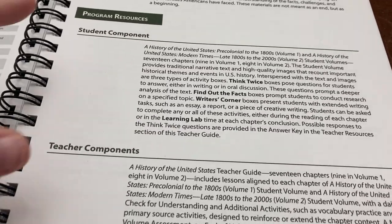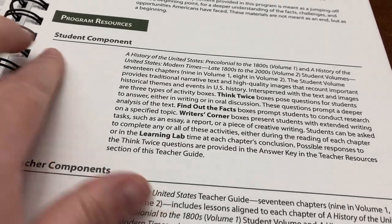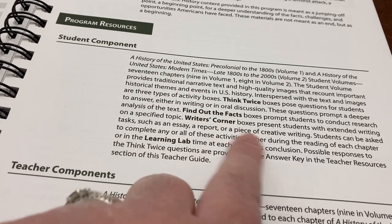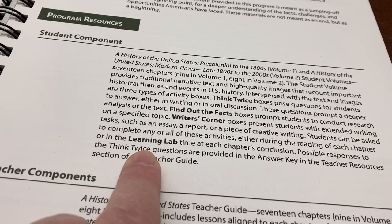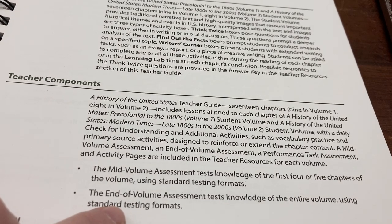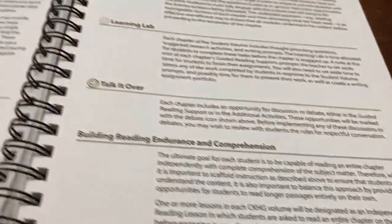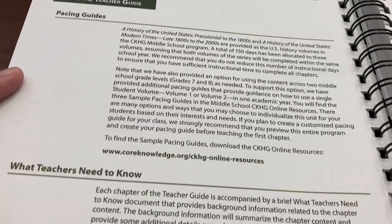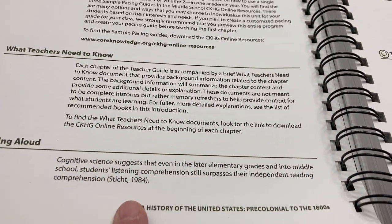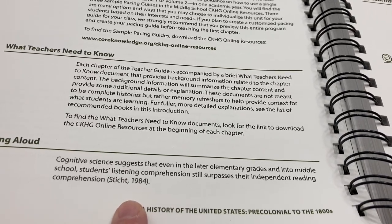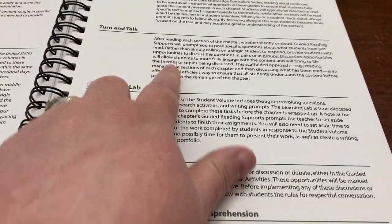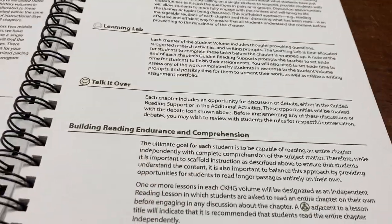The student readers have different components — I'll show you in a minute. There's a Think Twice box, a Find Out the Facts box, a Writer's Corner box, and a Learning Lab. Then it goes into the teacher components. There are some tests and assessments. It tells you what's in the teacher's guide, the pacing guide, what the teacher needs to know, and talks about reading aloud — how you should still be doing that even in middle school. There are also Turn and Talk, Learning Lab, and Talk It Over sections you'll see in the reader.